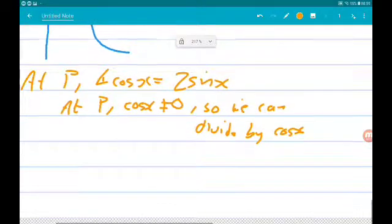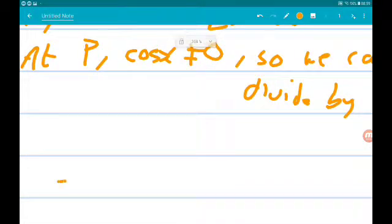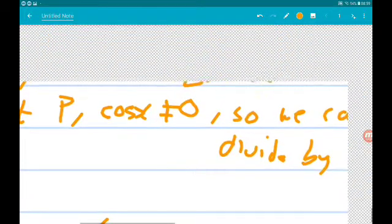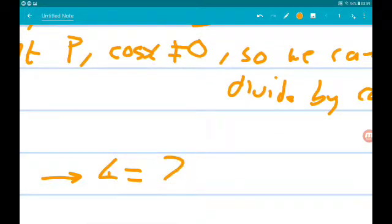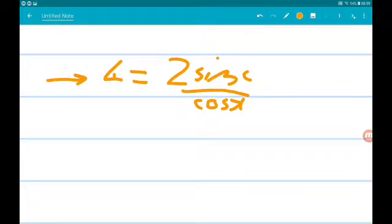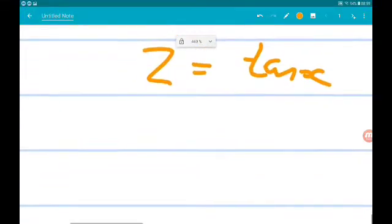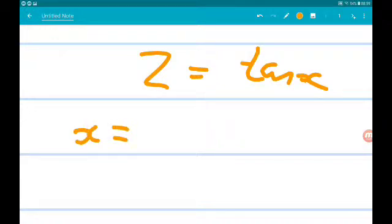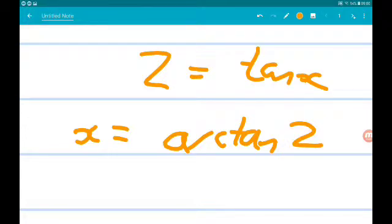Now that's going to give us 4 is equal to 2 sin x over cos x. Now sin x over cos x is tan x. So we can also divide through by 2 and we're going to get 2 is equal to tan x. So x is the inverse tan or arctan of 2. So that is the x coordinate.